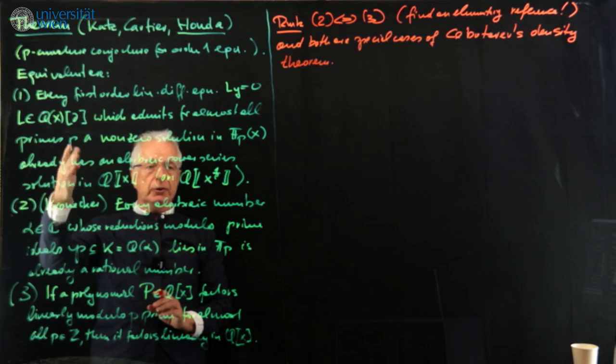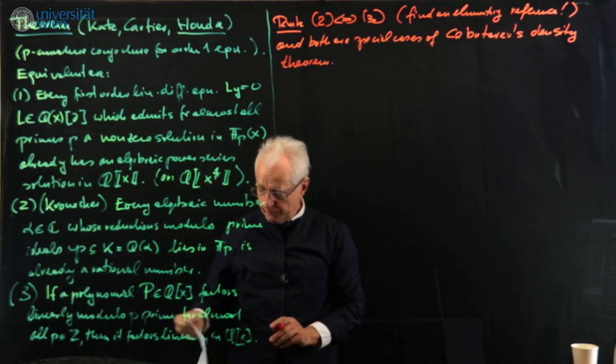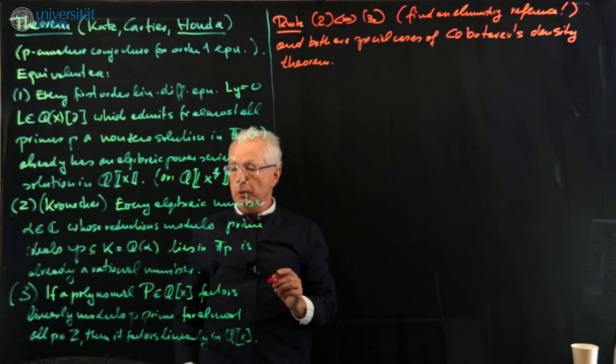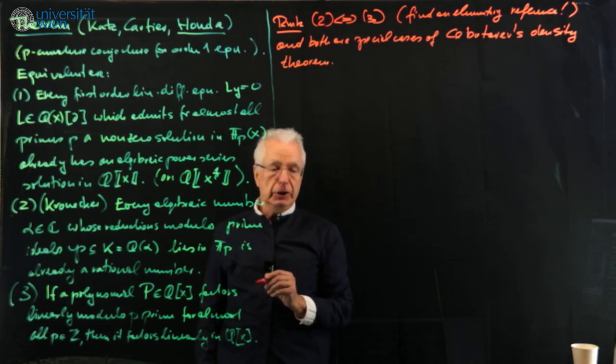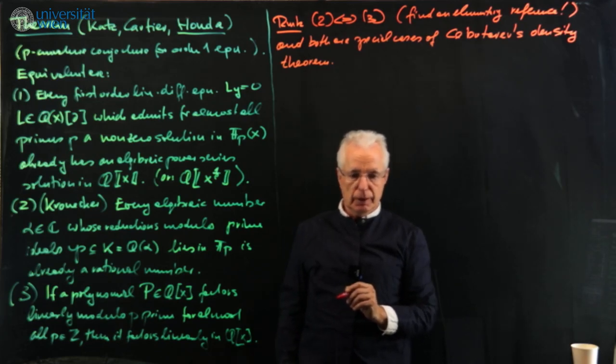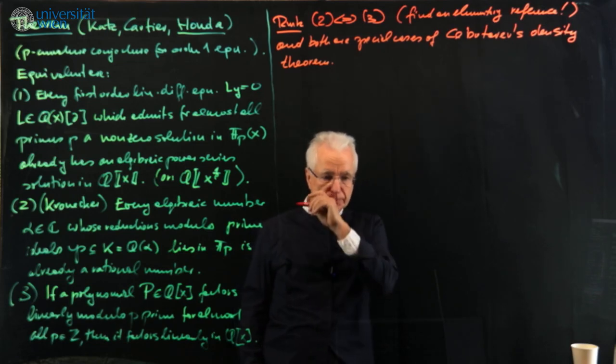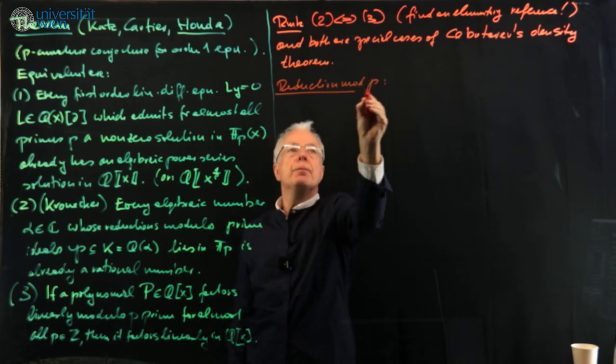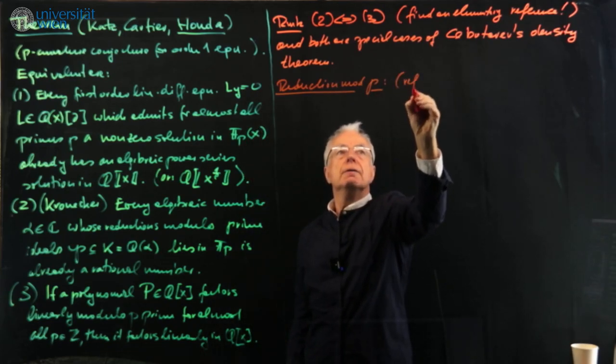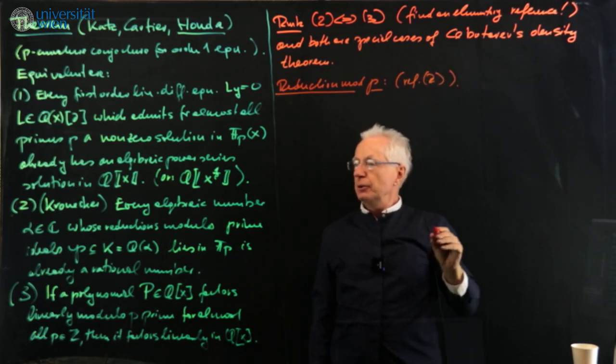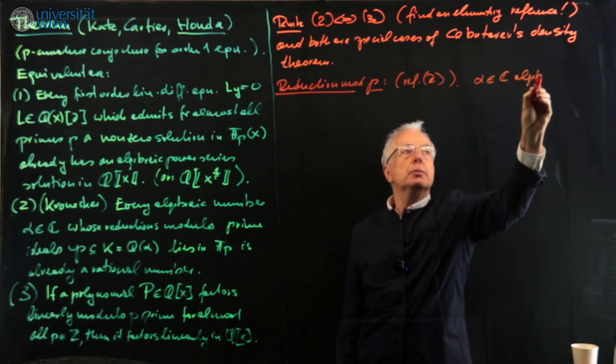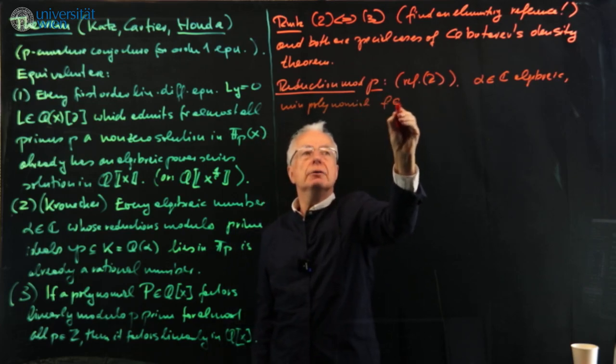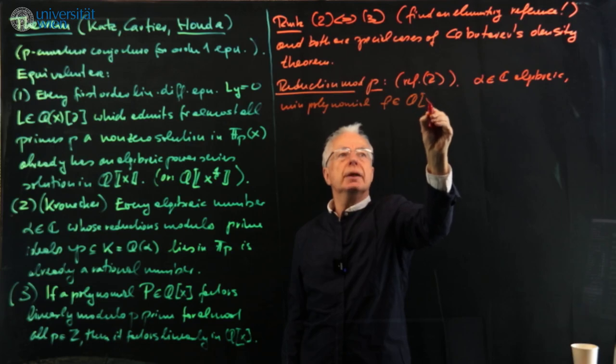Number three is easier to formulate. If a polynomial capital P in Q[X] factors linearly modulo prime p for almost all p in Z, then it factors linearly in Q[X]. This is also Kronecker. Number three is clear because you don't have to know anything, just linear factorization. Two and three are equivalent, but I did not find a good reference.